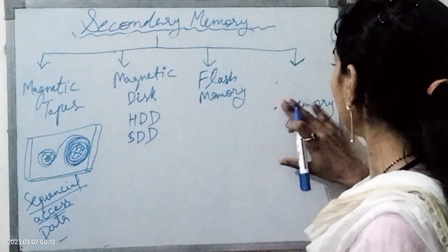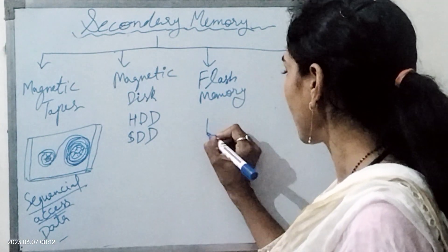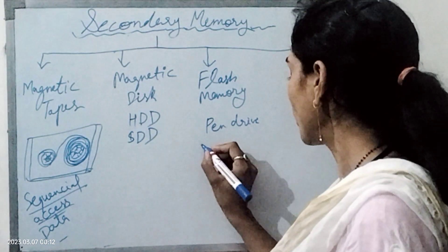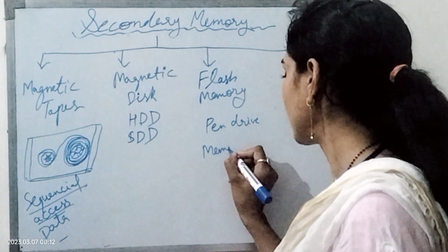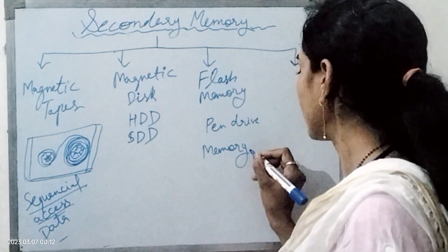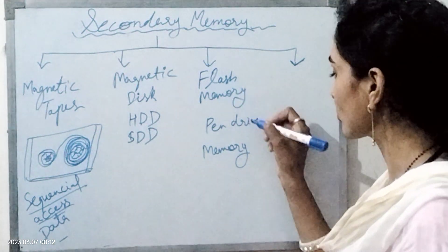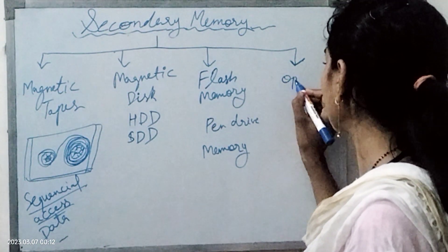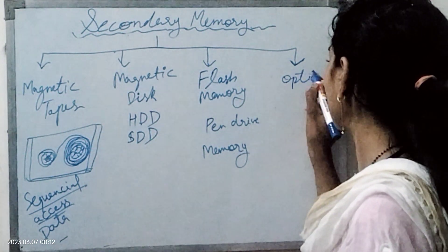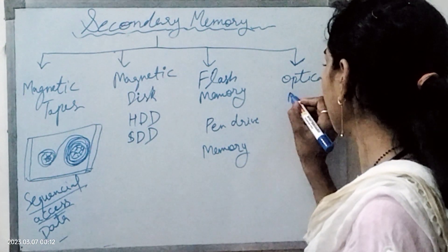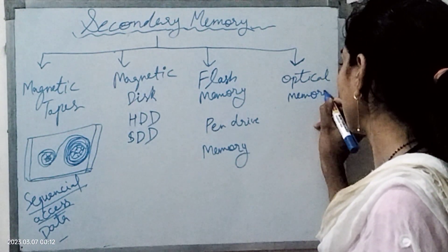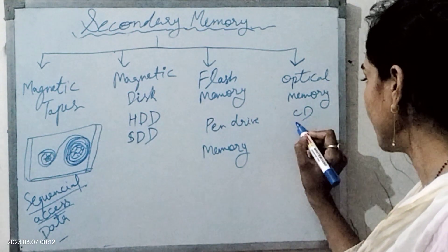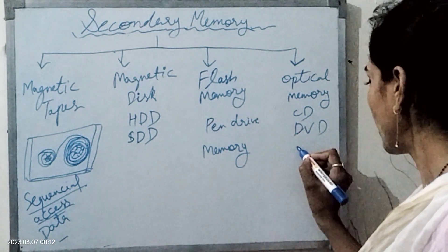Flash memory includes pen drive and memory card. After this is optical memory — optical memory includes CD, DVD, and Blu-ray.